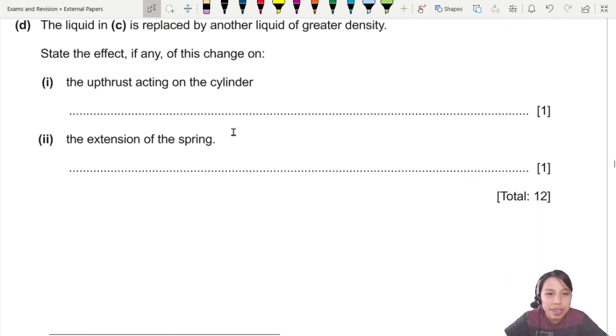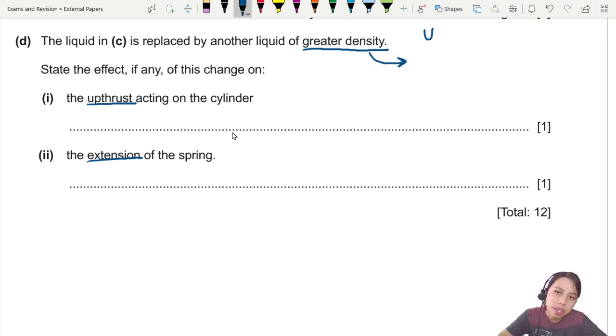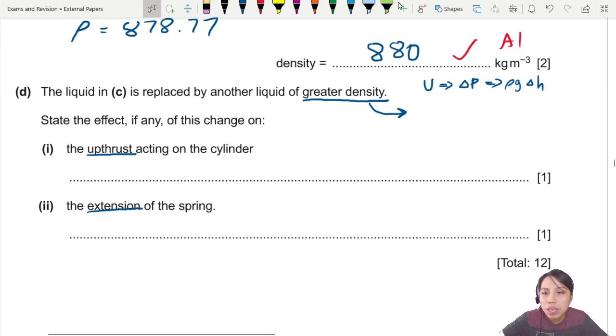So now your liquid is replaced with a liquid of a greater density. Ooh. Something has changed. State the effect on the upthrust and the extension of the spring. Okay. Let's think about what happens a greater density. When it's a greater density, your upthrust is related to the change in pressure, which is related to the rho g change in height. So if your thing is more dense, that means the pressure difference is increased, which means the upthrust is also increased. Because they're all related. So upthrust is greater. Upthrust increases, or is greater.